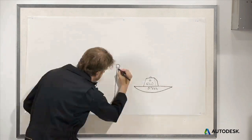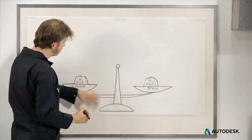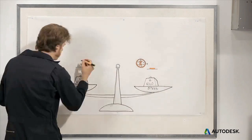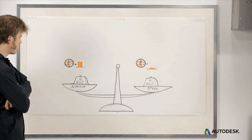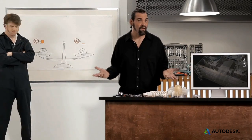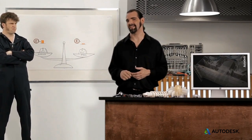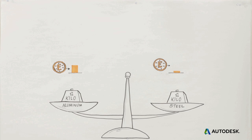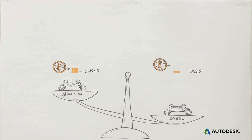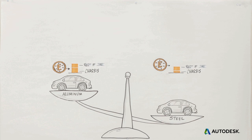Let's say you're choosing between steel and aluminum for a car chassis. Aluminum has about six times the embodied energy per kilo, so it's six times as bad, right? Not necessarily. Aluminum is up to two and a half times stronger per unit mass as steel, so you can make a lighter chassis from it. Even when you consider all the material that goes into making a car, most of the car's environmental impact comes from the energy used driving it, and that depends on how much weight it's carrying around.